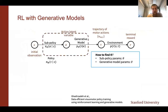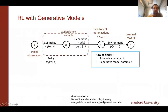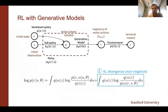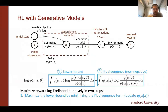The policy now consists of two parts: the generative model, and the sub-policy or high-level policy that assigns a distribution over the latent variable conditioned on the state. I've already introduced two ways to train the generative model. Next we can talk about how to train the sub-policy that assigns a distribution over the latent variable conditioned on state or observation. Similar to before, we introduce a variational policy and do the same math to derive an objective for the policy training problem.